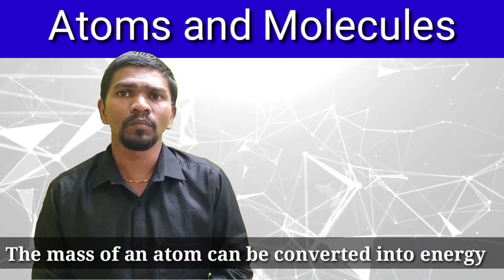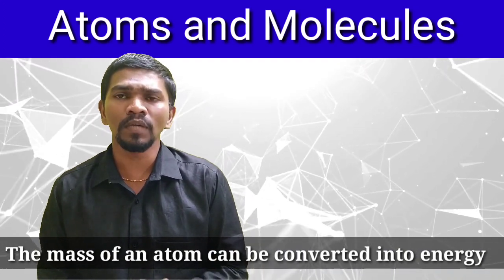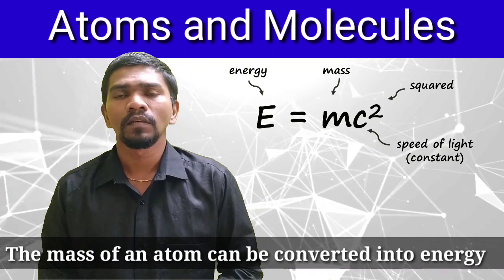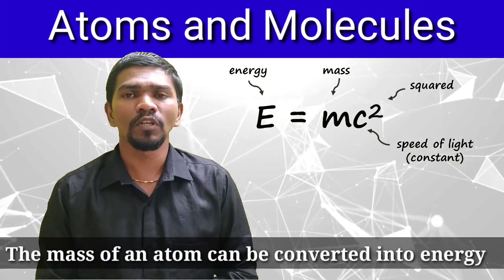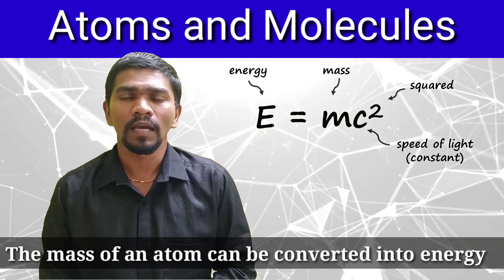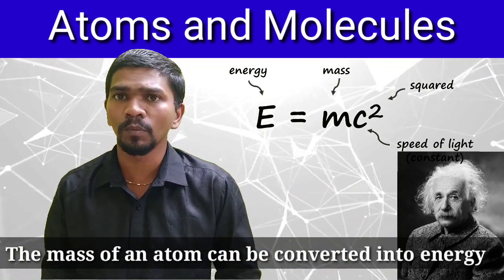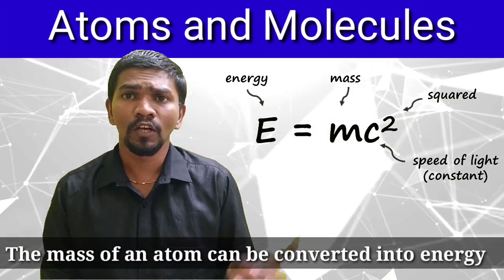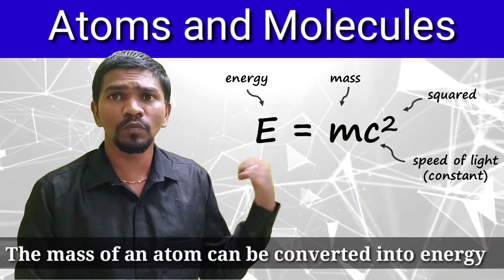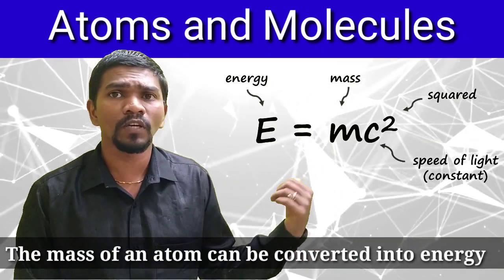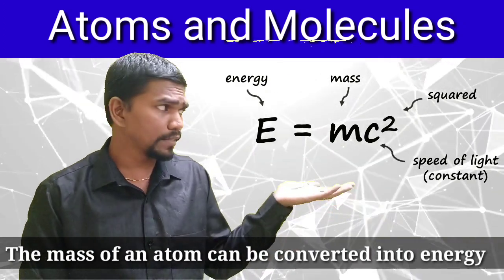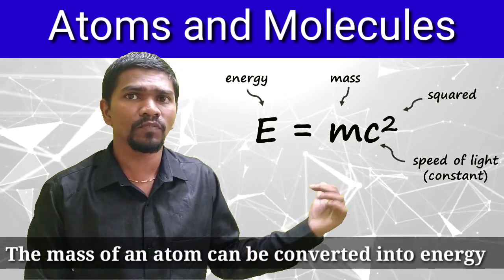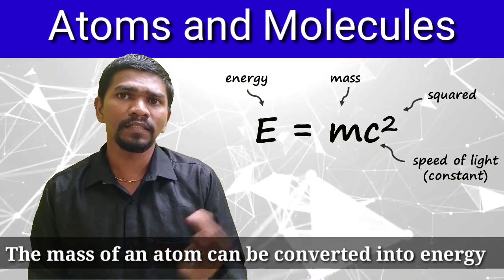The mass of an atom can be converted into energy. That is: E equals MC squared. Albert Einstein found this formula. E means energy, M means mass of the atom, and C means the speed of light, which is a constant. So speed of light multiplied by the mass of the element gives the energy. With the help of mass, we can find out the energy of the element. This is the basic principle used to construct a nuclear power station and even a nuclear bomb — everything is based on the formula E equals MC squared.